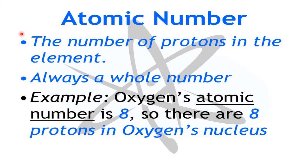Outside the nucleus, electrons revolve around it. So out of the three fundamental particles, two are in the nucleus and one is outside. In every atom, the number of electrons and the number of protons are always equal — because the electron carries a negative charge and the proton carries a positive charge, and we know the atom is electrically neutral.